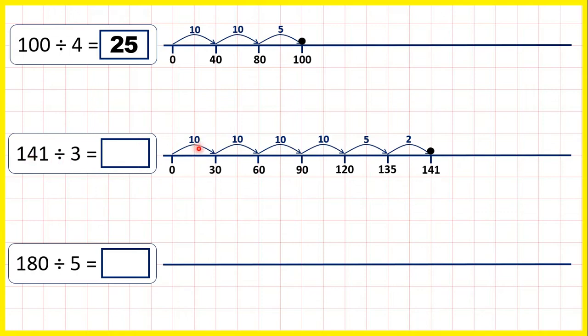So again, we just count up what we jumped. We jumped 10, 20, 30, 40—so 4 tens, a 5, and 2, giving us 47.